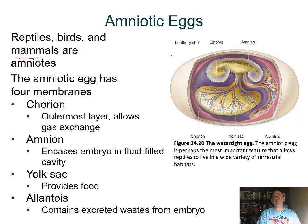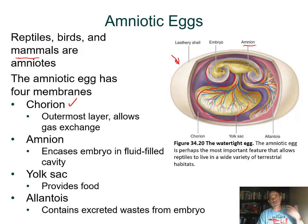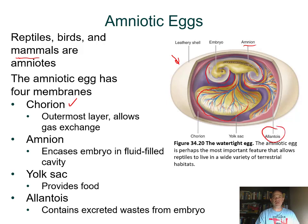Inside the amniotic egg, the amnion directly surrounds the embryo and contains amniotic fluid. There is also a membrane surrounding the yolk sac, the chorion—which is important for gas exchange as the outermost membrane, allowing oxygen in and carbon dioxide out—and the allantois, which serves as a place where waste products can be eliminated.